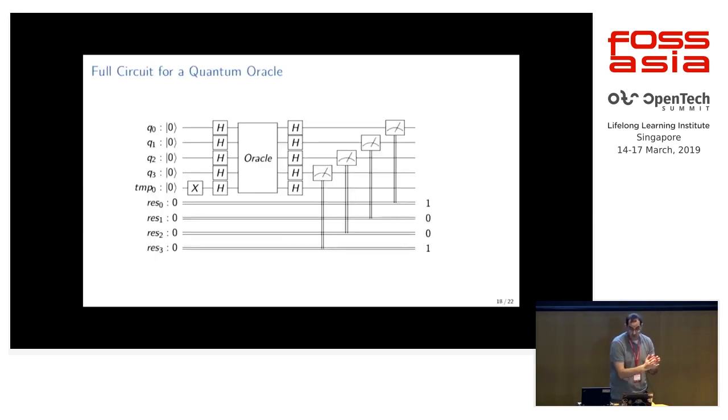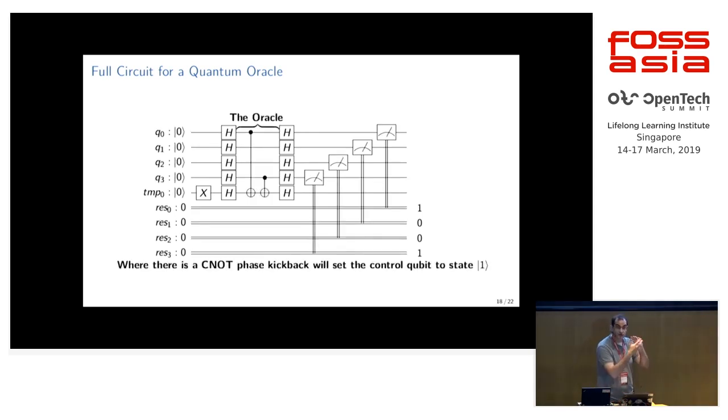We can plug this into a bigger circuit where we put the temp bit at an X to make it a one. Then we apply Hadamards to everything to move it to that plus X state. Then we apply our Oracle function with the CNOTs for our secret value, which is one, zero, zero, one. Then we apply Hadamards again. And we get our one output. And then we measure. And we get the right answer every time, or at least hopefully. And now I'm going to hopefully show this to you on a real quantum computer. So let's hope this live demo works.